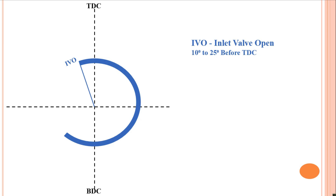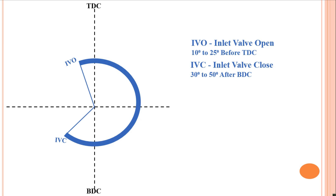If the inlet valve were closed at BDC, the cylinder would fill with less air than its capacity and the air pressure would be below atmospheric. To avoid this situation, the inlet valve opens 10 to 25 degrees before TDC and closes 30 to 50 degrees after BDC, at which point the compression stroke begins.